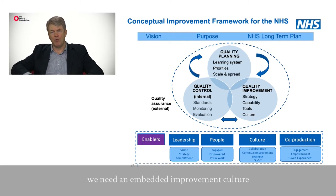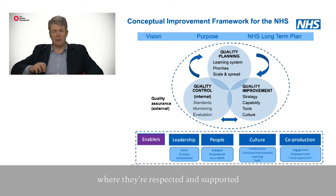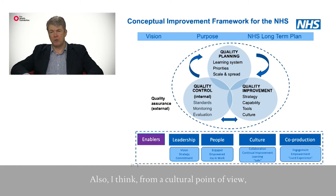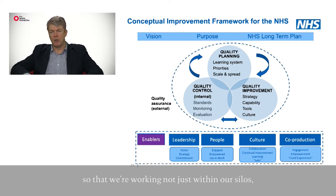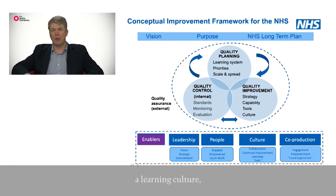The third enabler — and I think it's one of the really important pieces — is how do we build a culture where people feel safe to try things? We need an embedded improvement culture where people feel that they're encouraged, empowered, and working in an environment where they're respected and supported to try things and try to make improvements to their service. Also from a cultural point of view, building a much more collaborative approach so we're working not just within our silos but across systems — a collaborative culture, a continual improvement culture, a learning culture.